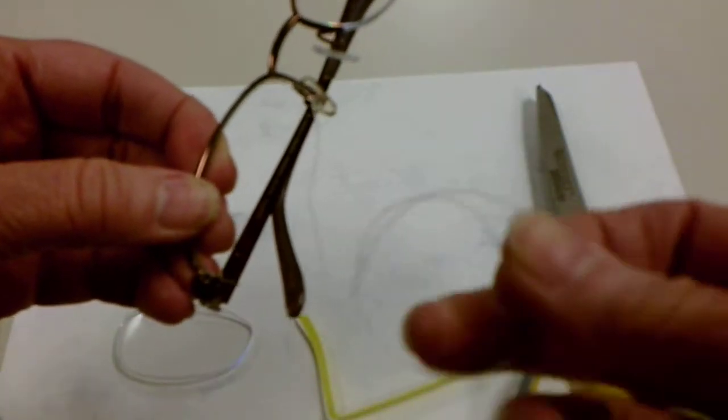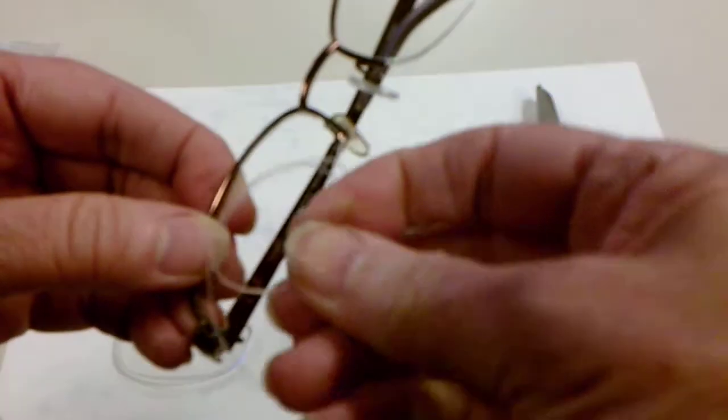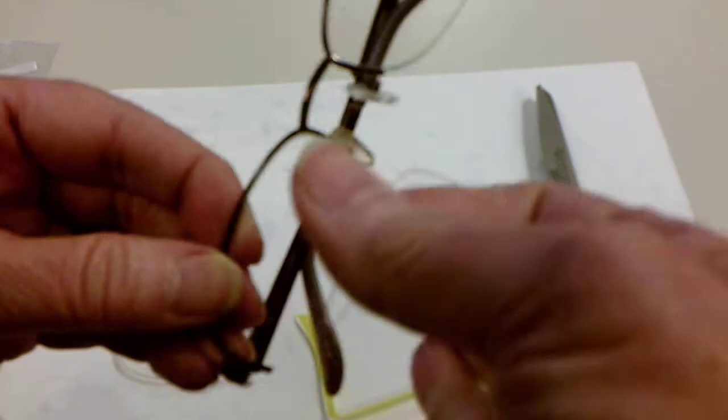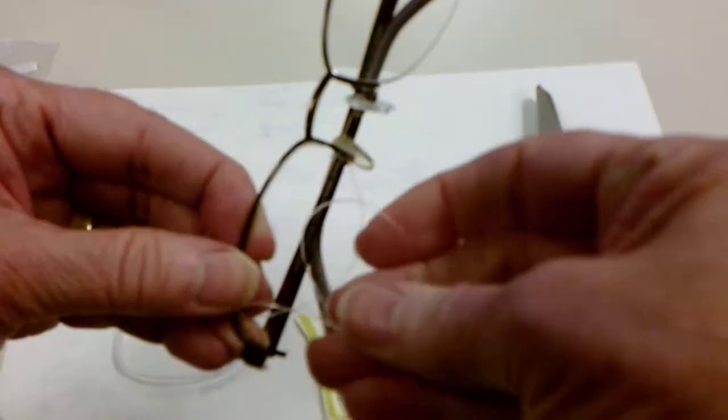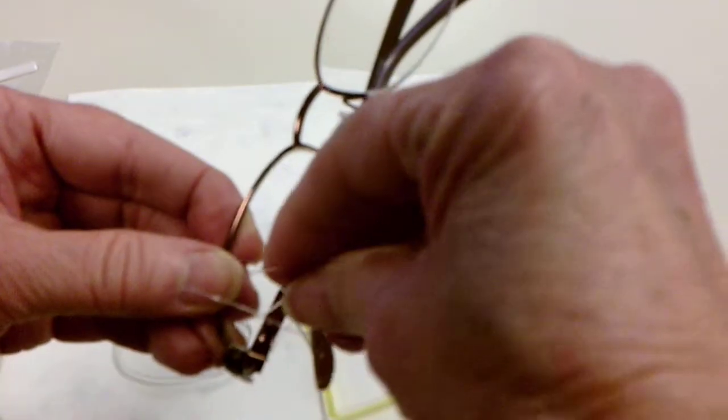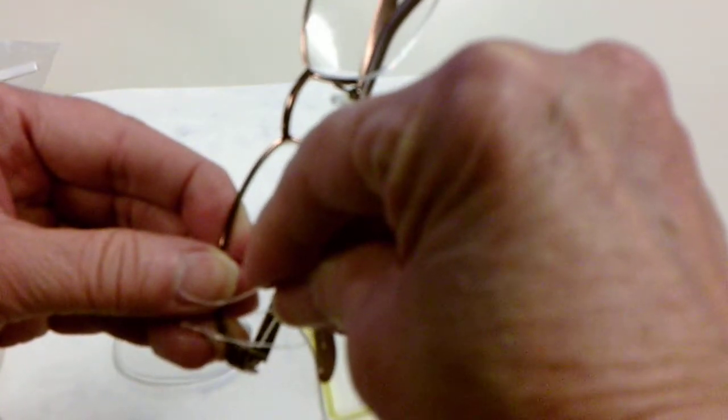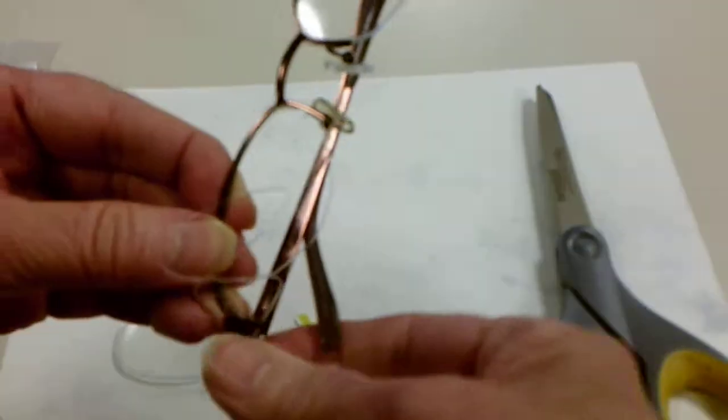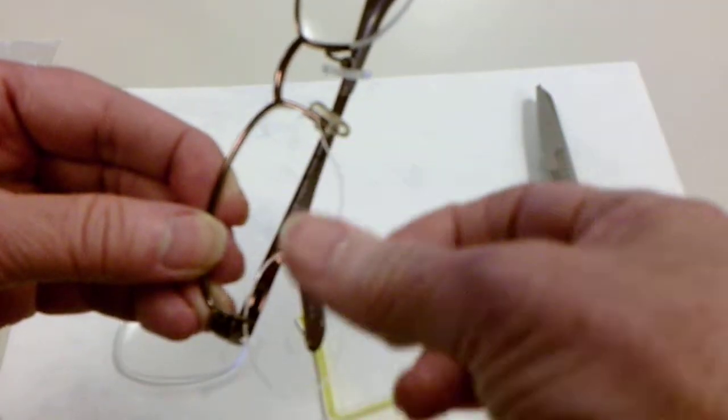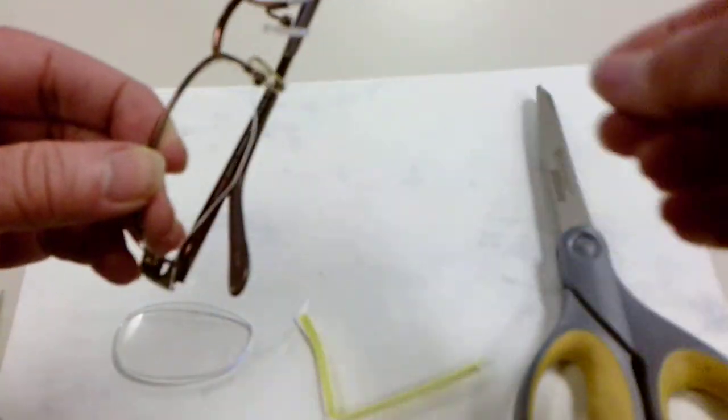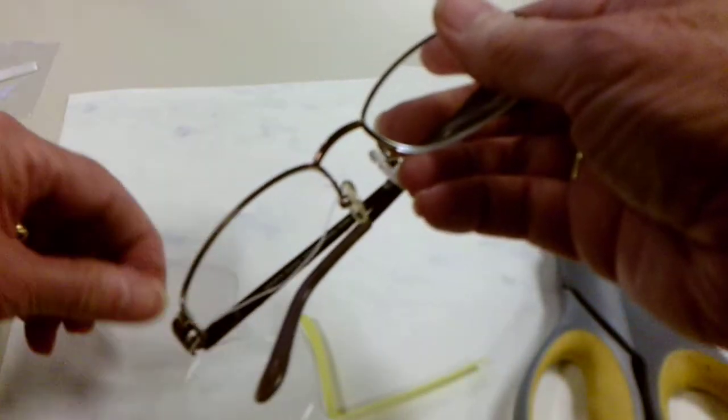Then we're going to come around to the outer hole. Sometimes it's hard to determine how long to make the string, but this is easy peasy. Go ahead and put it through one of the holes.